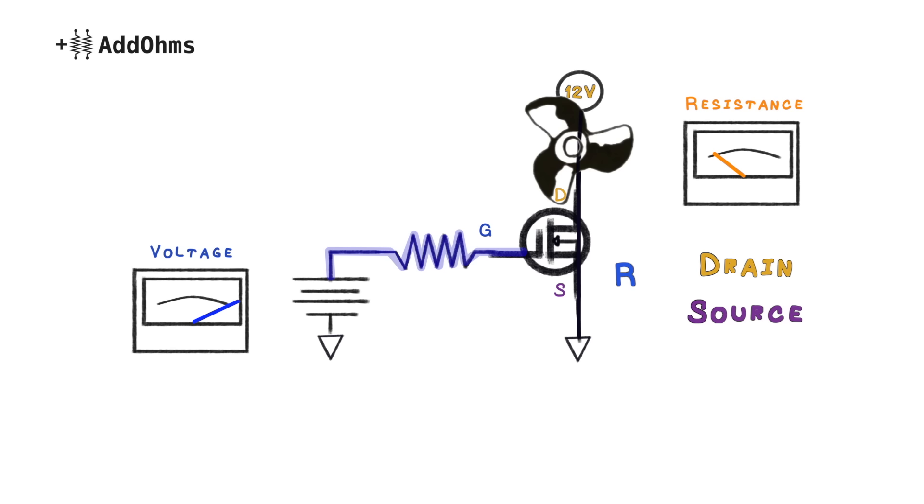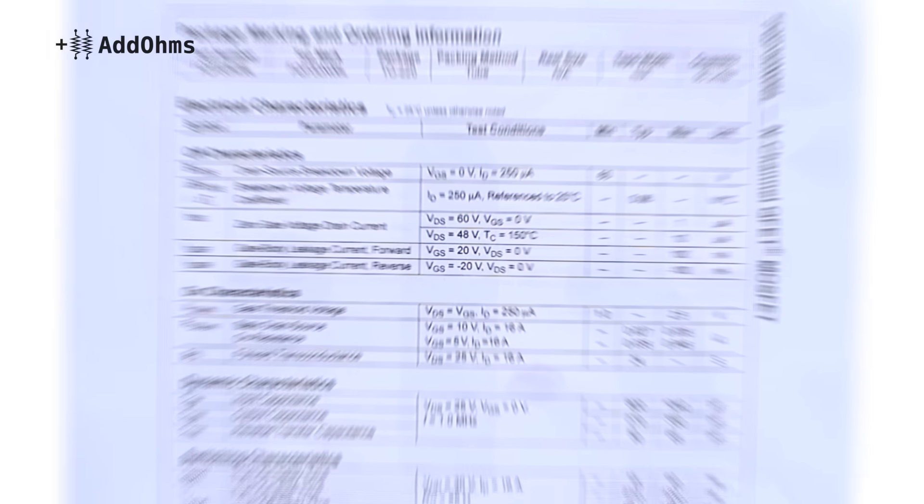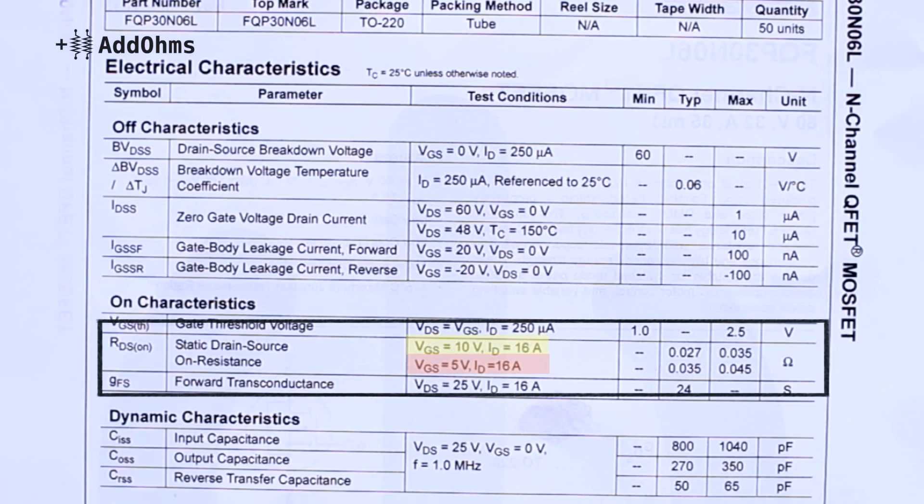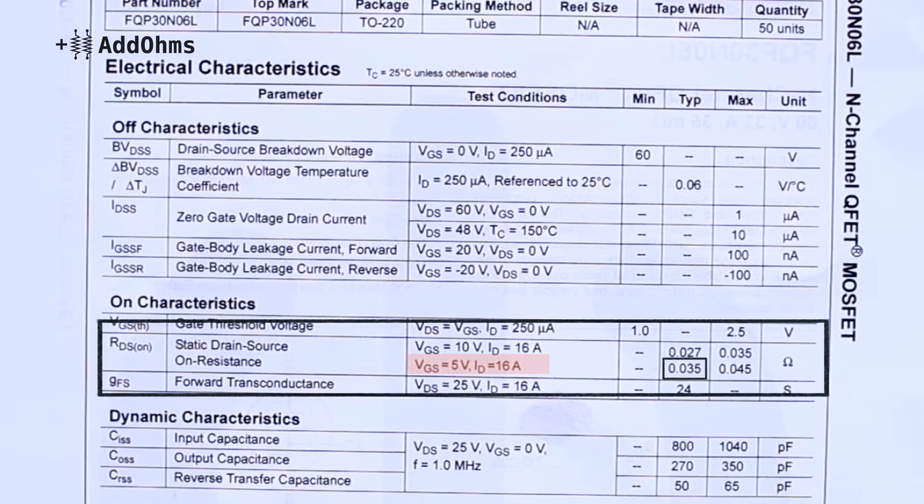Since the resistance is between the drain and source, it is known as RDS-ON, and can always be found in the MOSFET's datasheet. For example, this is a FQP30N06L. Let's take a look at its datasheet from Fairchild. We can see that RDS is given when there are two different voltages from gate to source. At 10V, the ON resistance will be about 27mΩ, and at 5V, the ON resistance is only about 35mΩ. That's pretty small when you think about it.